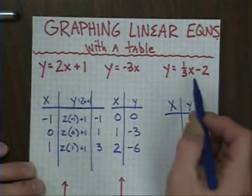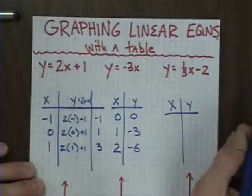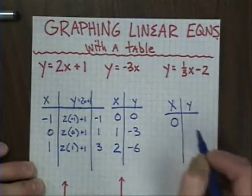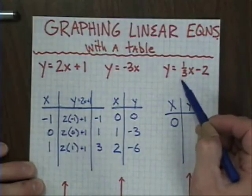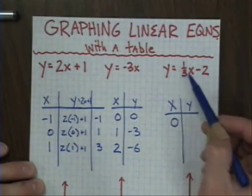Finally, this one has a variable in it and it has a fraction. Well, they all have variables, but this one has a fraction. So I'm going to choose different values. Now, this is a trick I learned a long time ago. If a fraction is involved in the problem and you choose a multiple of that denominator,